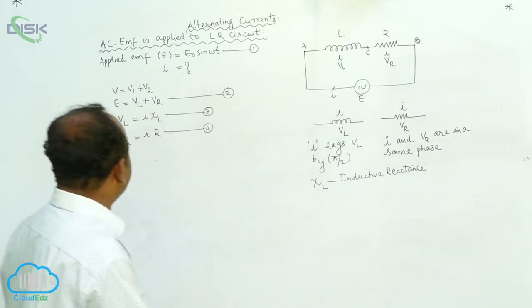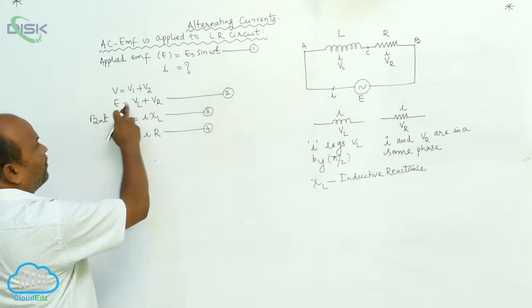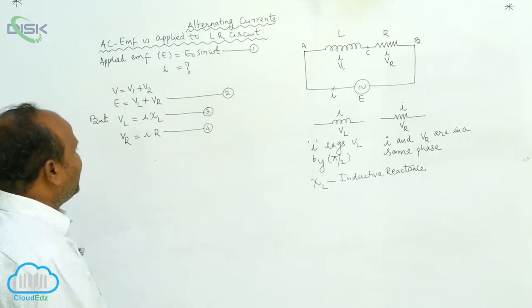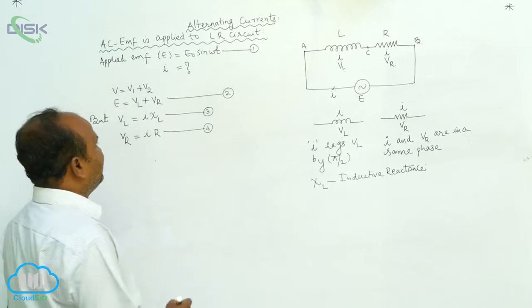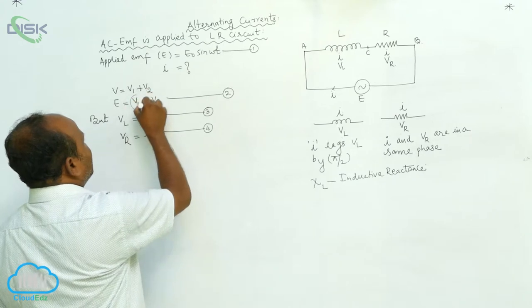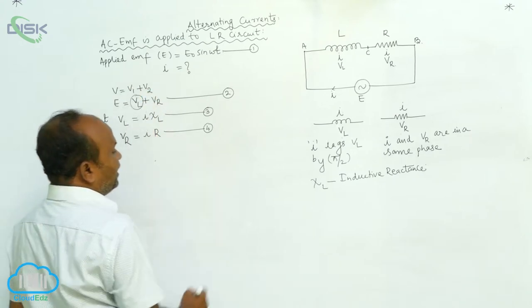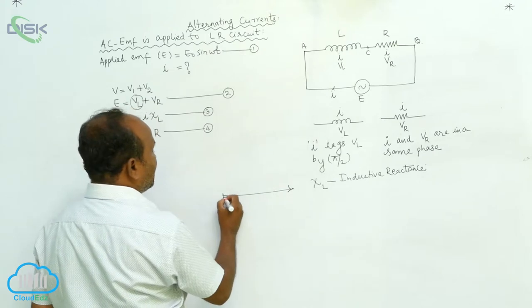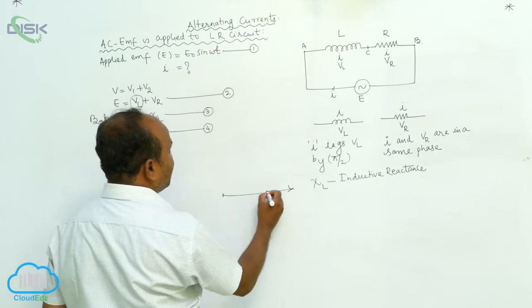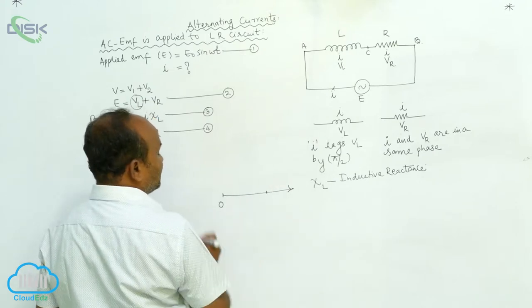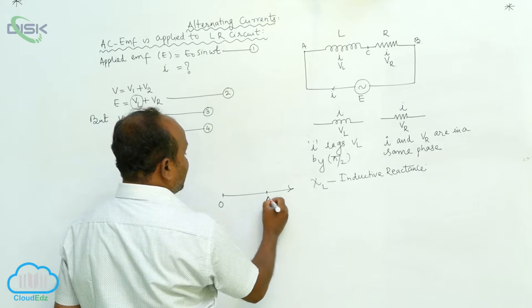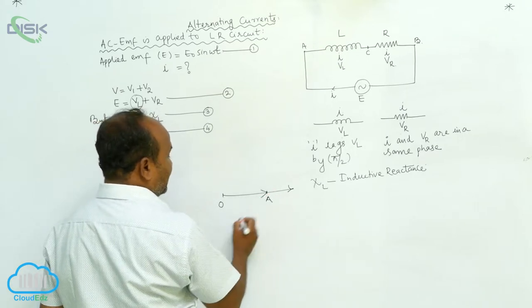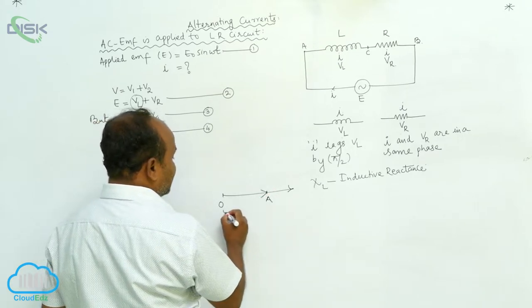Here in this case, E is equal to VL plus VR. Vectorially we can calculate. Now this VL is represented — this is called the origin, this point is called A, and VL is represented like this.